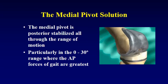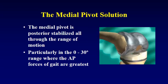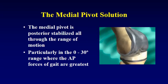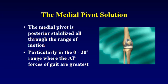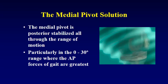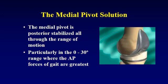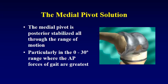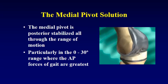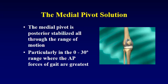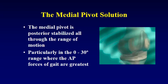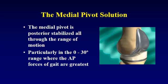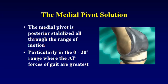In this video, the medial side is on the far side and the lateral side on the near. Although this is an artist's rendition, it attempts to show that there will be no forward motion of the femur on the tibia because of the ball and socket on the lateral side, and this is particularly true in the 0 to 30 degree range, where the anterior forces of gait are the greatest.